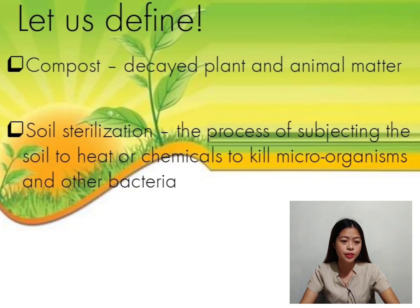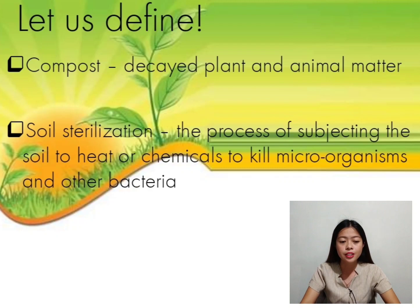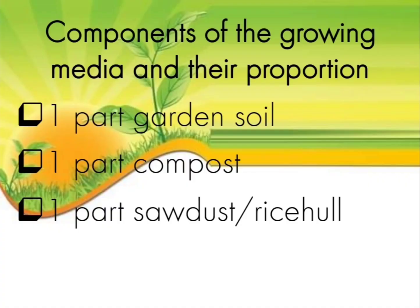Let's observe our definition of terms. Number one: compost — this is the decayed plant and animal matter. Second is soil sterilization — this is the process of subjecting the soil to heat or chemicals to kill microorganisms and other bacteria.